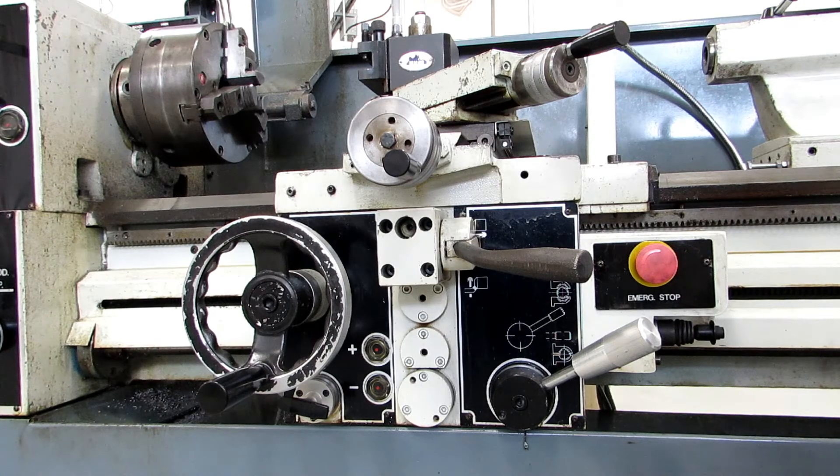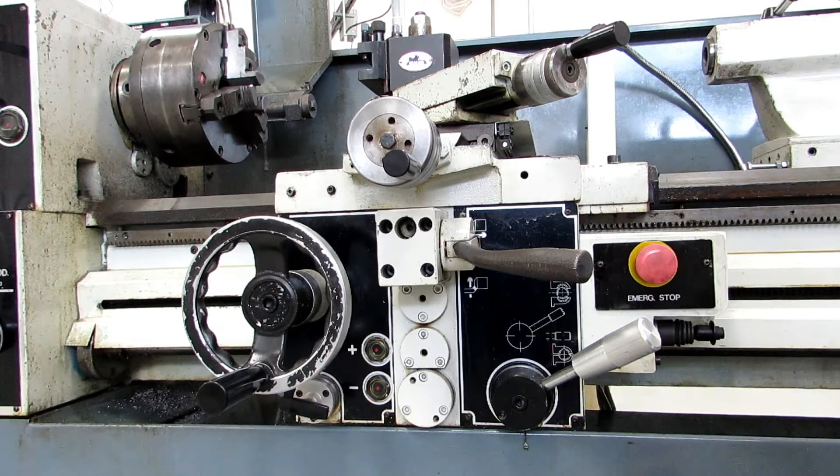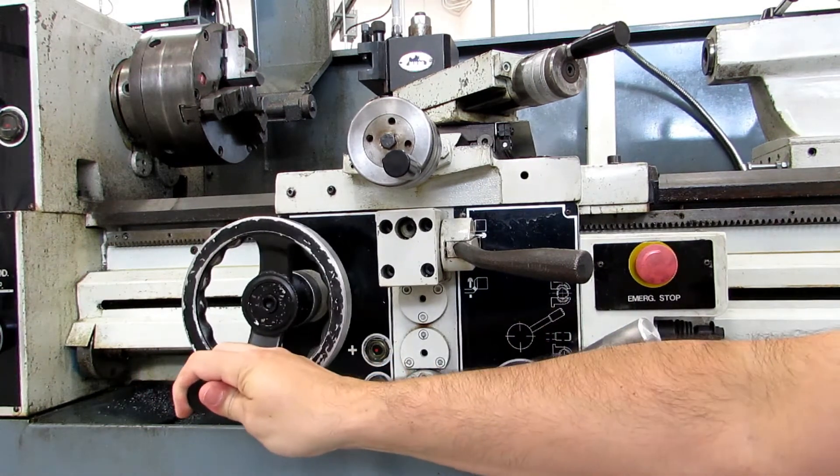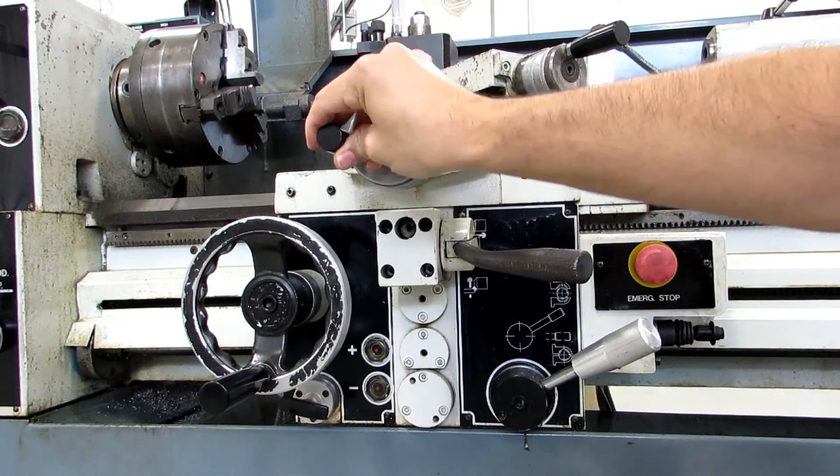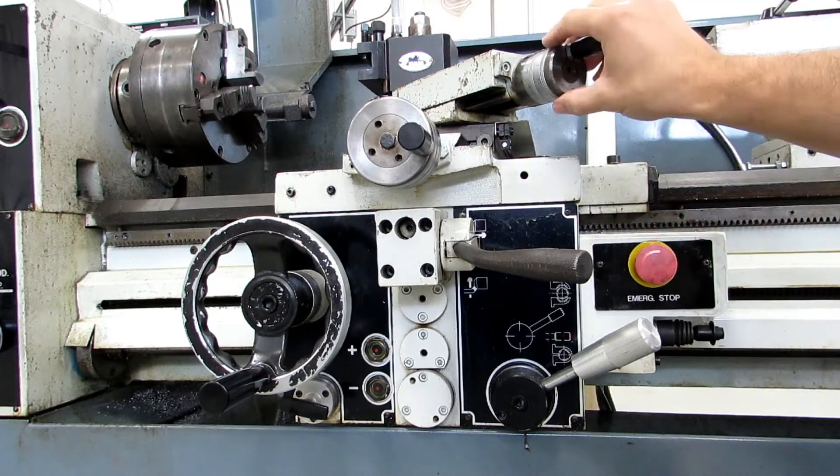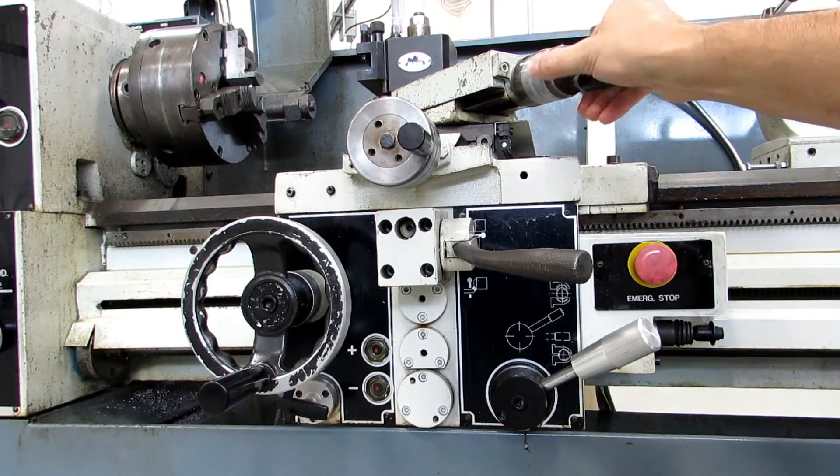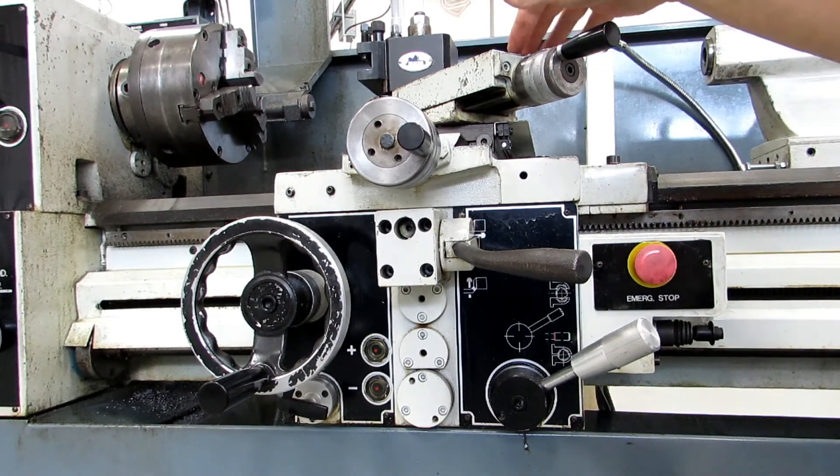So, this is the carriage of the lathe, and I'm going to go through all these controls. Now, the ones that every lathe has are the longitudinal feed, which moves the carriage back and forth along the ways. You have the cross feed, which moves the tool in and out to control your diameter. And you have the compound, which allows you to cut tapers and angles and chamfers and anything like that. That moves at whatever angle the compound is set at.